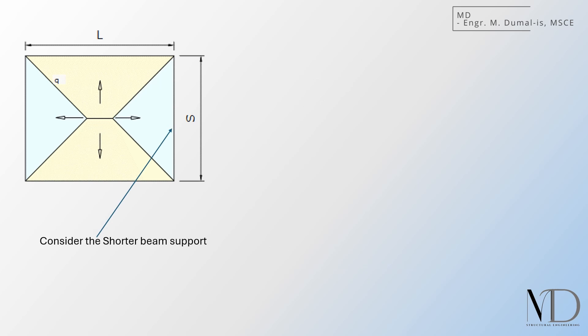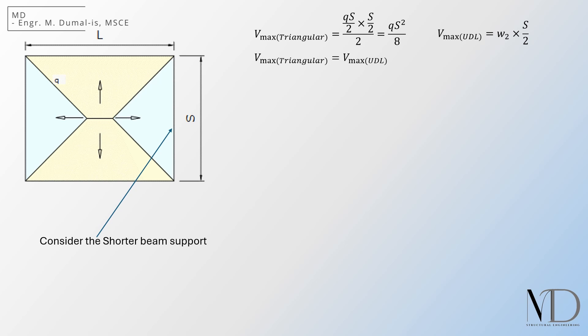Moving on to the shorter span. We solve for the support reactions of both the original triangular load and the equivalent UDL, and the result is as follows. We assume that they are equal, and solve for W2. Finally, this will be the equivalent UDL for a triangular load assuming an equivalent maximum shear.